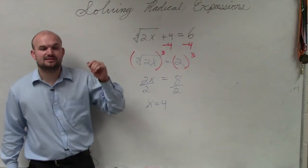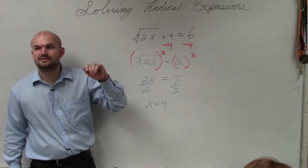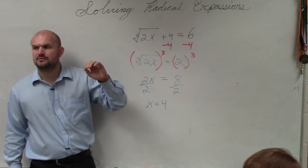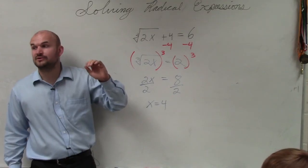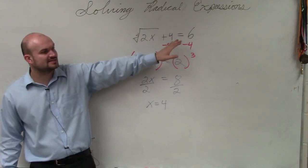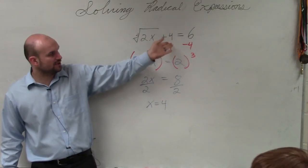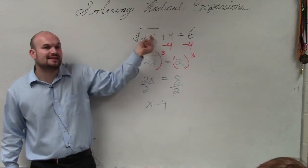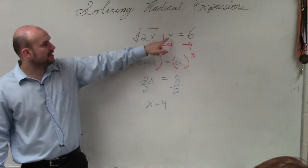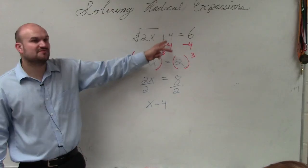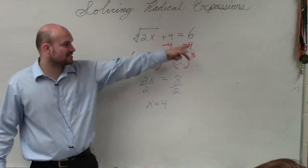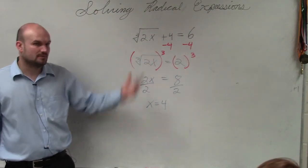The main important thing you need to know for solving all of these problems: when you're doing inverse operations, the most important step is to isolate that cube root first. Because if you cubed without isolating, you'd have to multiply the cube root of 2x plus 4 times itself three times — you'd have to include the 4. That's why I subtracted the 4 first, so now it's just the expression by itself.